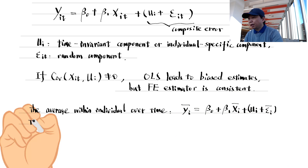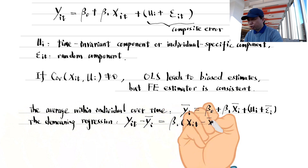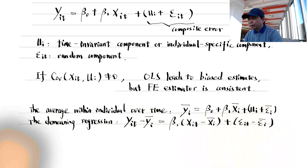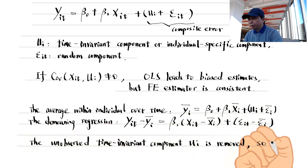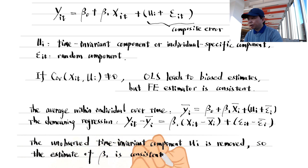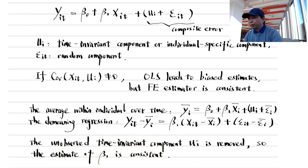In this method, we first average within each individual over time and obtain the y_i bar equation. Notice that the time-invariant error component remains unchanged, as well as all the time-invariant variables in the model. After subtracting the individual mean from each observation, we get the demeaned data and the demeaning regression. The time-invariant unobserved component mu_i has been eliminated in the demeaning equation, so the estimate of beta is consistent.